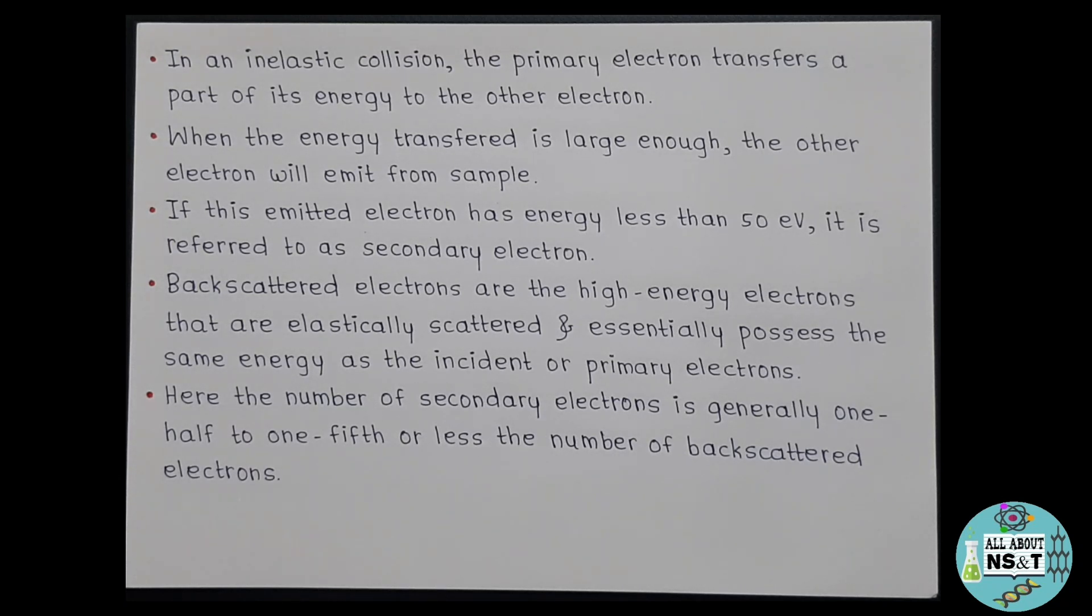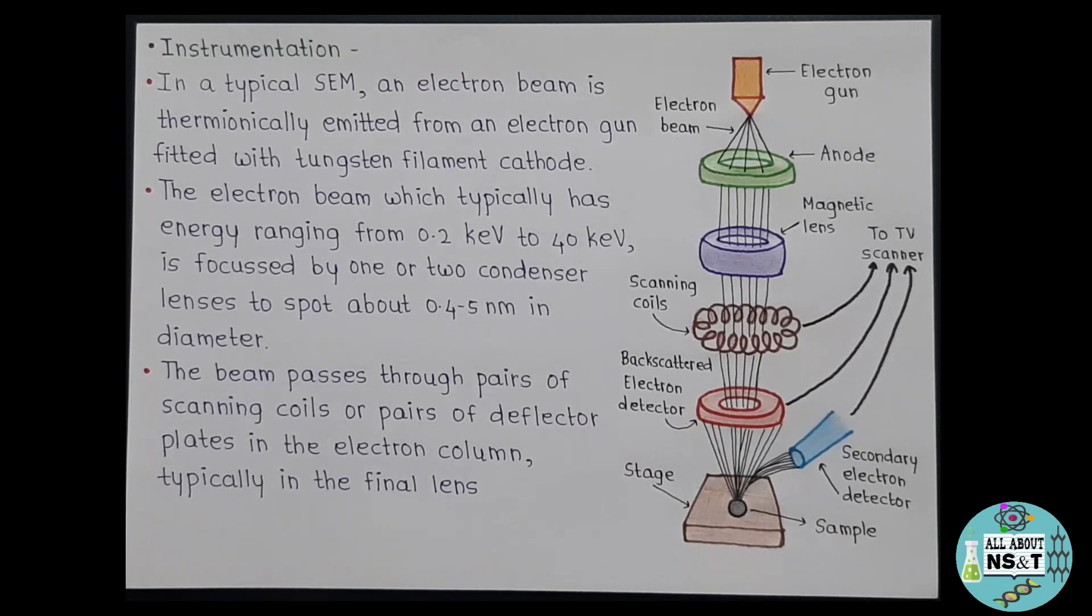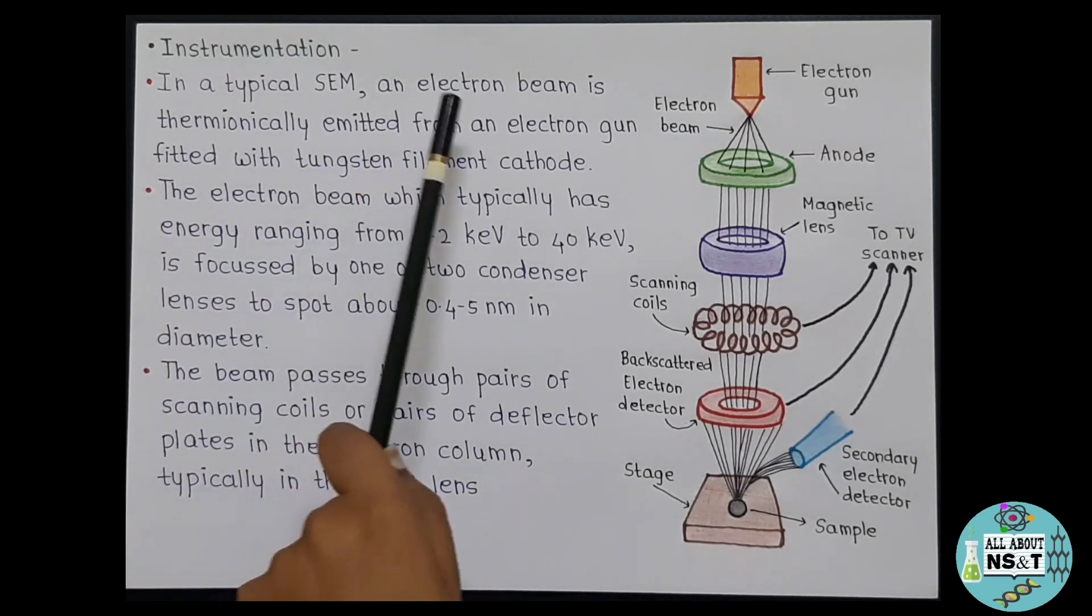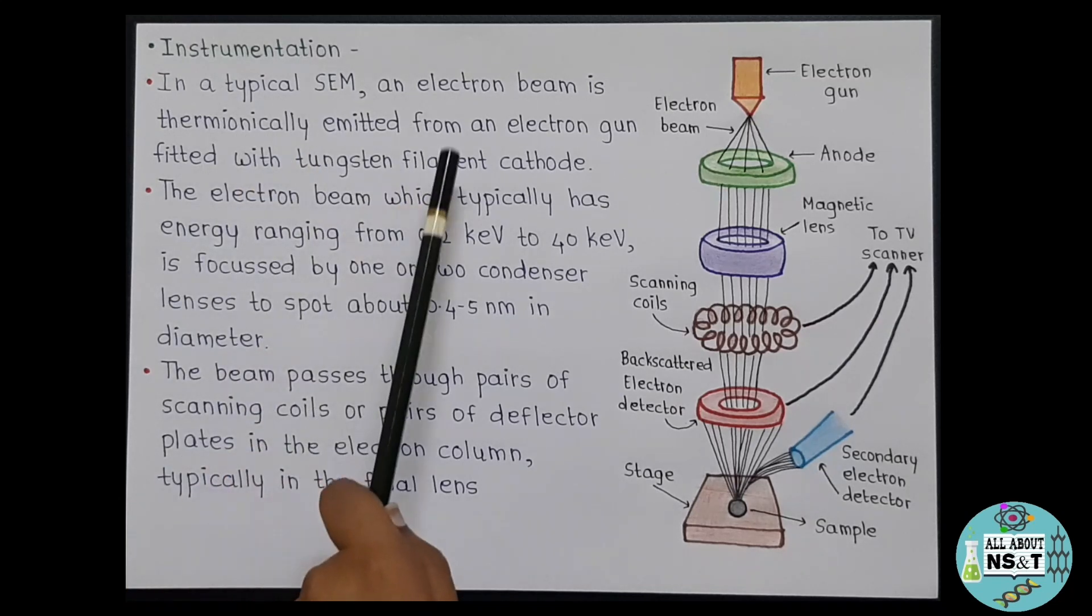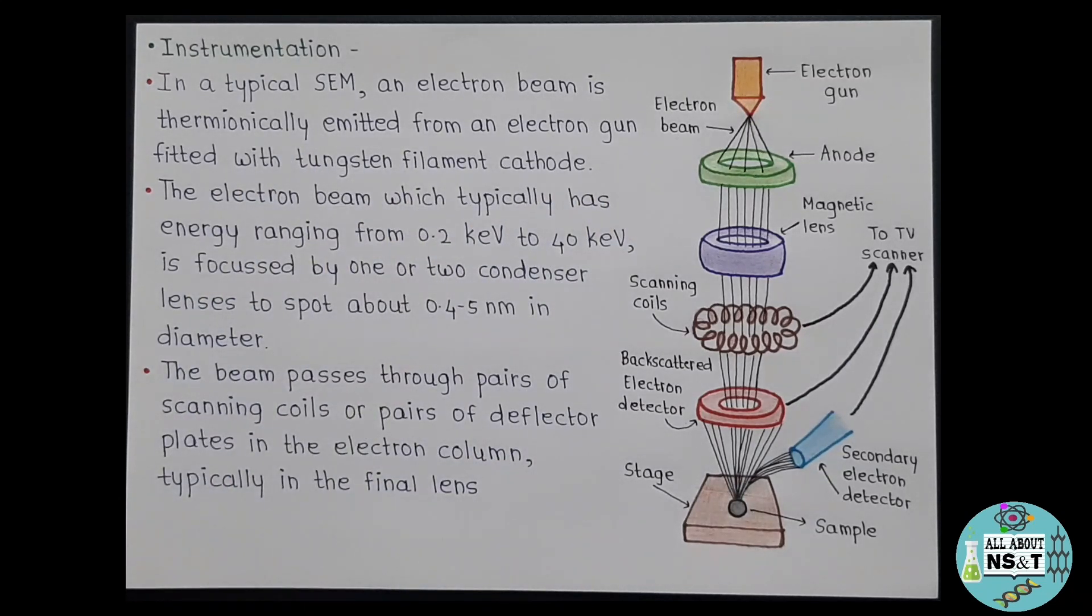So this was all about the basic principle of SEM, and now let's move towards its instrumentation part. So here is the diagram that shows essential parts of a scanning electron microscope. In a typical SEM, an electron beam is thermionically emitted from an electron gun fitted with tungsten filament cathode. So here tungsten is mostly used in guns because it has highest melting point and lowest vapor pressure of all metals, allowing it to be heated for electron emission, and also it is cheap. The electron beam, which typically has energy ranging from 0.2 kilo electron volt to 40 kilo electron volt, is focused by one or two condenser lenses to spot about 0.5 to 25 nanometers in diameter.